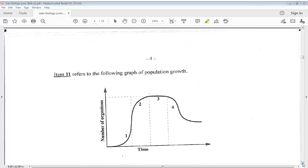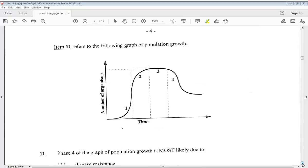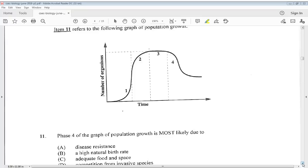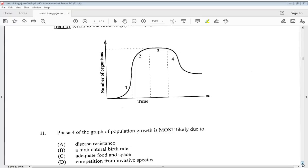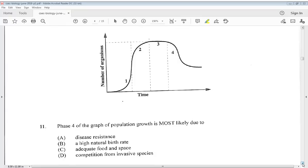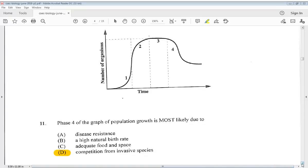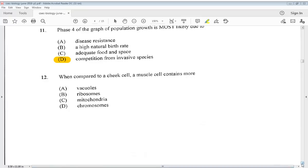Let's get into question 11. Item 11 refers to the following graph of population growth. This question is not new. Phase four of the graph of population growth is most likely due to disease resistance, a high natural birth rate, adequate food and space, or competition from invasive species? We know the answer is D. Now, when compared to a cheek cell, a muscle cell contains more? We know it is C, mitochondria. This is a question that has been repeated.